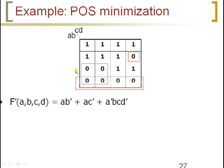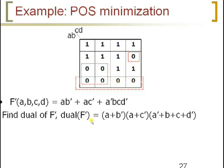For the second block, the value of A is constant at one and the value of B is varying, while the value of C is constant at zero and the value of D is varying. So the expression for this block is A C-bar. For the single-cell group, you get four literals: A-complement, B, C, and D-complement, because throughout that row A and B are constant, and throughout that column C and D are constant. So we have now obtained F-complement.